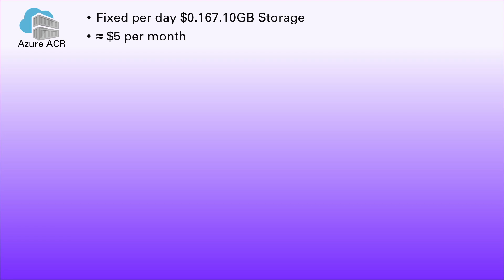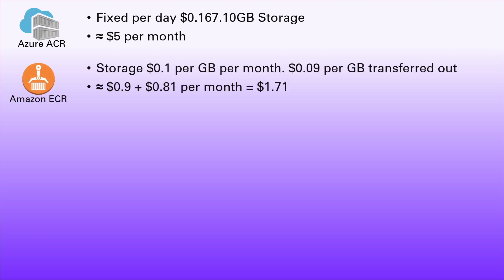Five dollars per month is not a huge cost, but it's not free. Moving on to Amazon — the Amazon Elastic Container Registry charges $0.10 per gigabyte per month for storage and $0.09 per gigabyte for transfer out. Our 12 gigabytes of storage gives us 90 cents per month, and transfer out costs 81 cents per month, for a total of $1.71 per month — not a huge amount, but still not free.